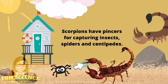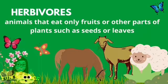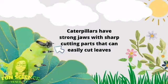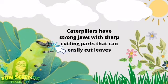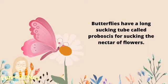Some animals eat only fruits or other parts of plants, such as seeds or leaves. These are called herbivores. Herbivores use their strong jaws, feeding tubes, flat teeth, and trunks. Caterpillars have strong jaws with sharp cutting parts that can easily cut leaves. Butterflies have a long sucking tube called proboscis for sucking the nectar of flowers.